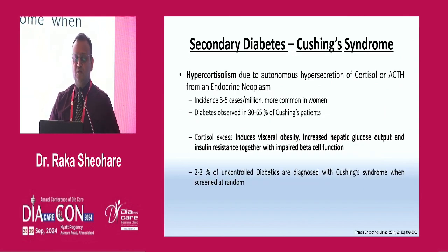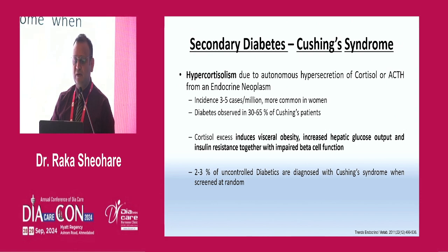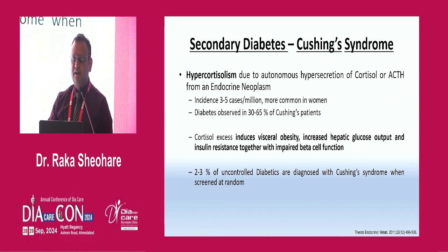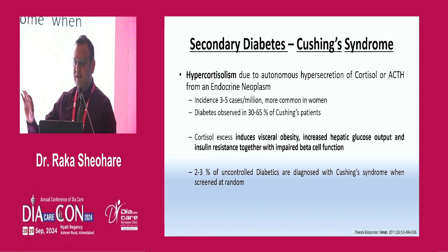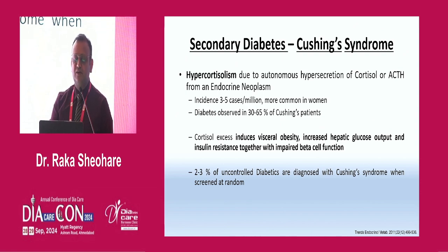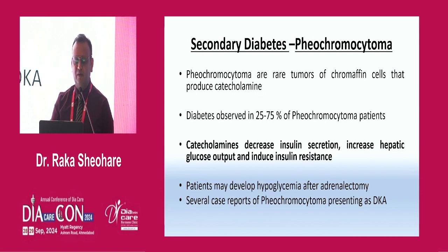Now we come to Cushing syndrome. Hypercortisolism due to autonomous hypersecretion of cortisol or ACTH from an endocrine tumor causes visceral obesity, increased hepatic glucose output, and insulin resistance, together with decreased beta cell function. 2–3% of uncontrolled diabetic patients coming to your clinic can have Cushing syndrome — if you have a clinical clue, you can identify it.